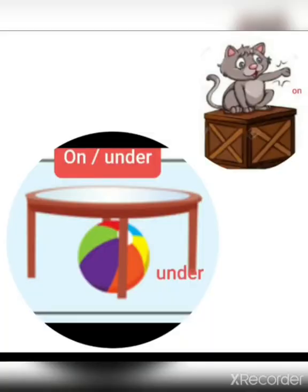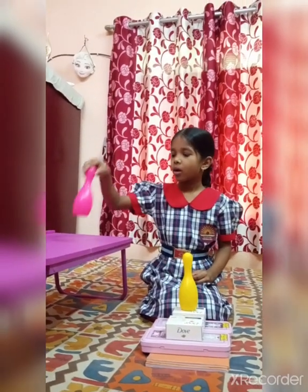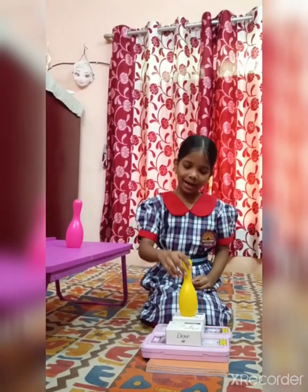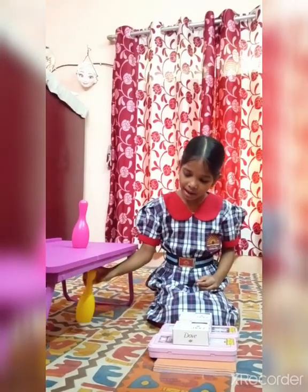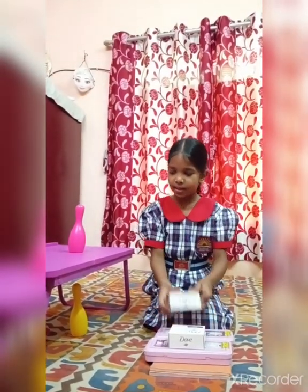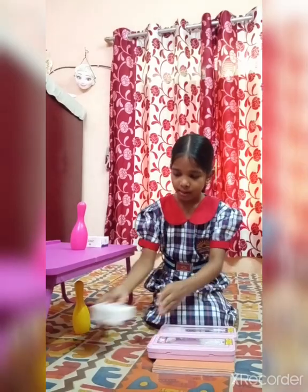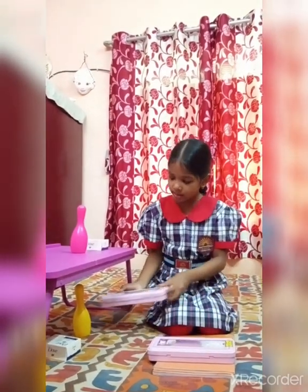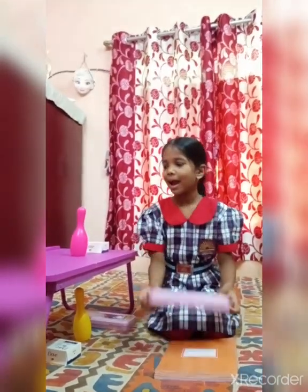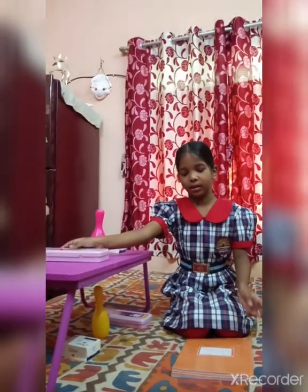I am inside. On and under. The ball is under the table. The cat is sitting on the box. This is on the table and this is under the table.